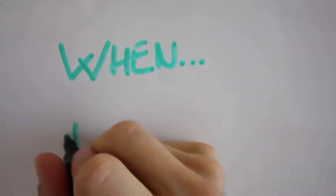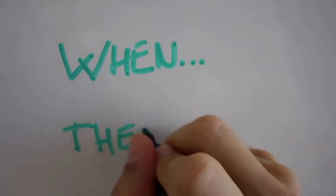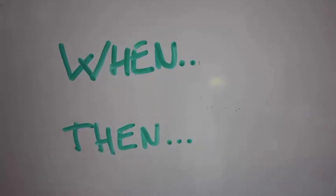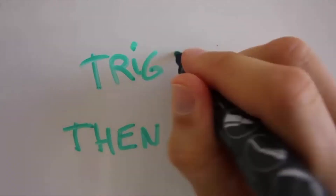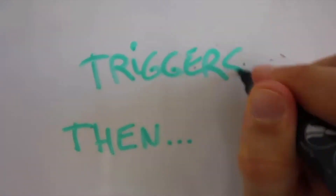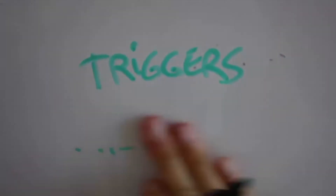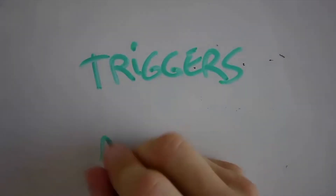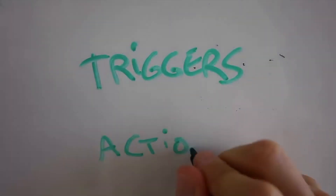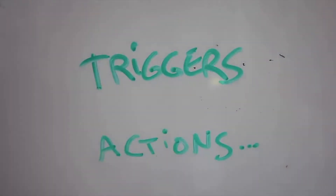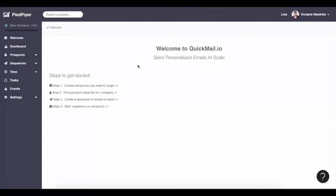With workflow, you get to specify when something happened, then do something, all within QuickMail. We call 'when' a trigger and we call 'then' an action. So it's a simple way to automate things within QuickMail.